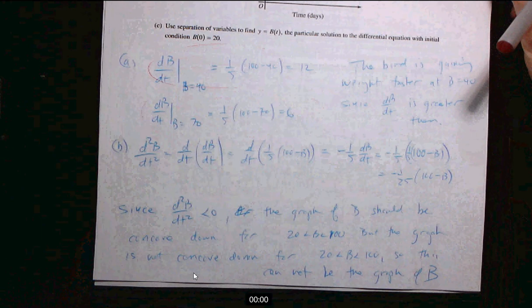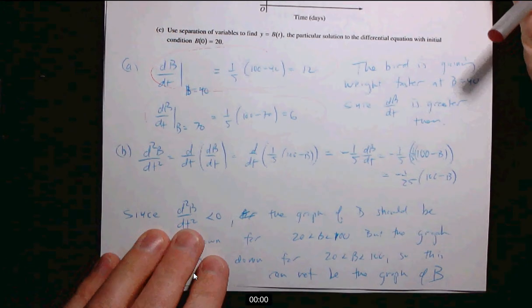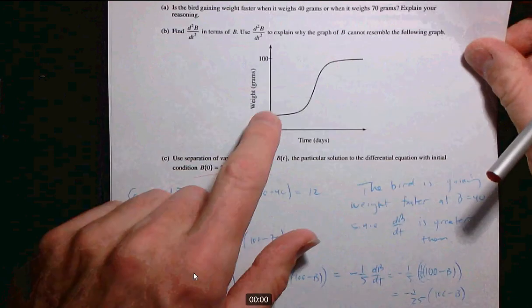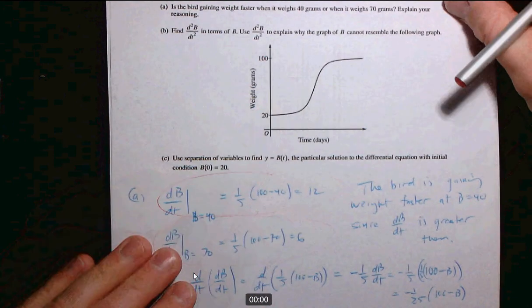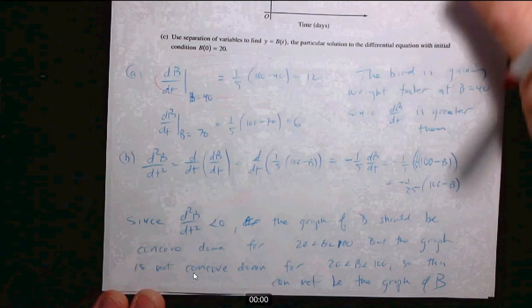And again, just be specific. Say because the second derivative of this function is negative, the graph of this function should be concave down. But the graph of the function that is given is not concave down on that entire interval. Therefore, that can't be the graph of the function.